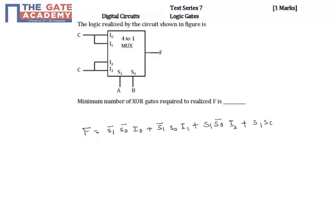s1 s0 into i3. So s1, s0, i0, i1, i2, and i3 are given, which we substitute. So this is